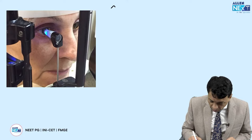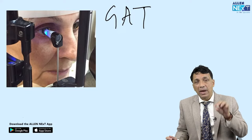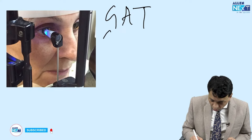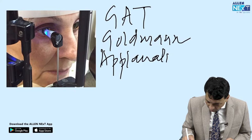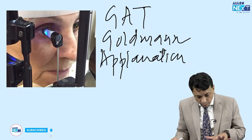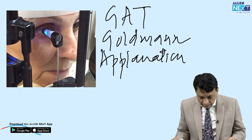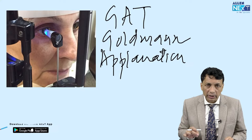This is the Goldmann applanation tonometer — the gold standard for tonometry. The best and most accurate tonometer for measuring intraocular pressure is called the Goldmann, named after the Swiss ophthalmologist who devised it. Applanation is the principle because it applanates the surface of the cornea. With the blue light and the typical touching of the cornea, this is the GAT — the most accurate instrument for recording intraocular pressure.